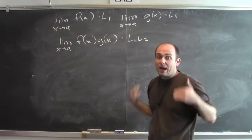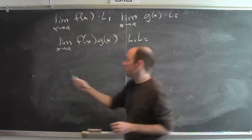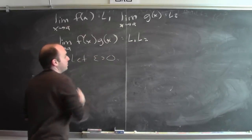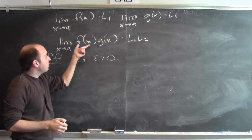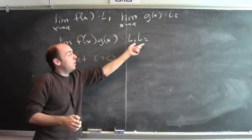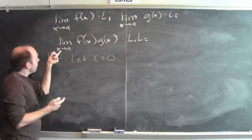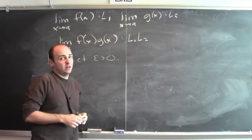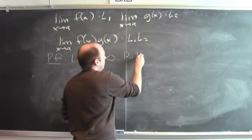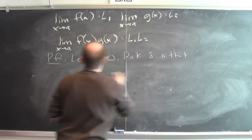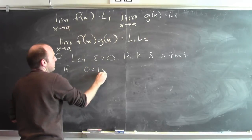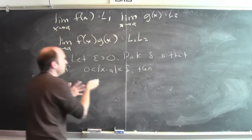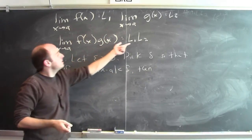To justify this, we're going to go back to the epsilon-delta definition of limit. The proof starts: let epsilon be greater than 0. That epsilon records how close I want f(x)·g(x) to be to l1·l2. Then I have to figure out how close x needs to be to a in order to guarantee that f(x)·g(x) is within epsilon of l1·l2. So my next step is to pick delta so that if 0 < |x − a| < delta, I can say something about how close f(x)·g(x) is to l1·l2.